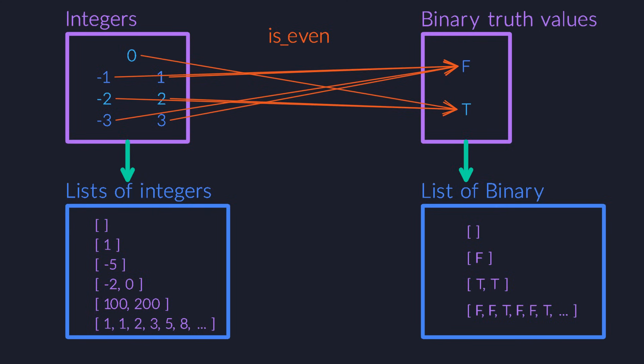In category theory, these type constructors are called functors. It's important to realize that I've drawn these functor arrows in a different style than the morphisms, the functions. That's because functors are not ordinary functions. The list functor does not take an integer and turn it into a list.